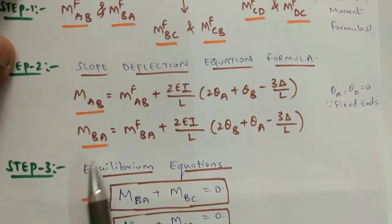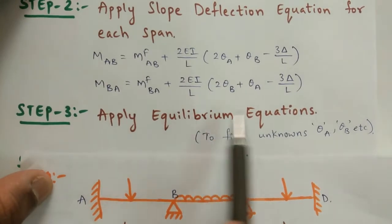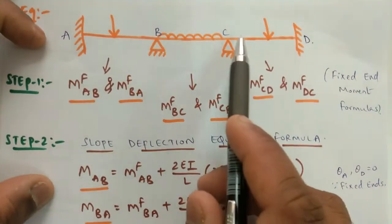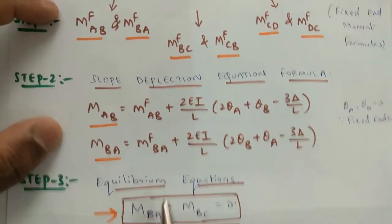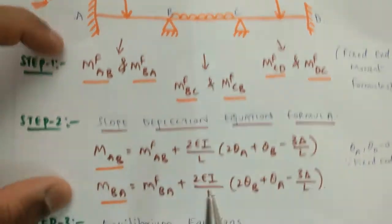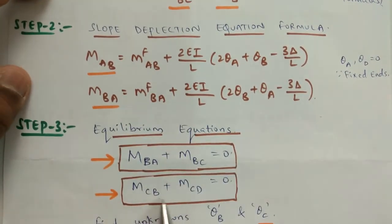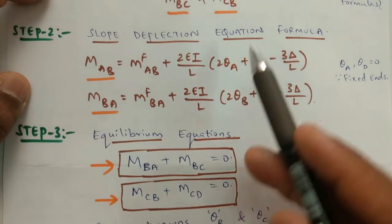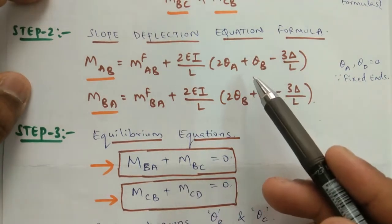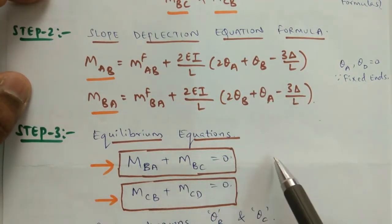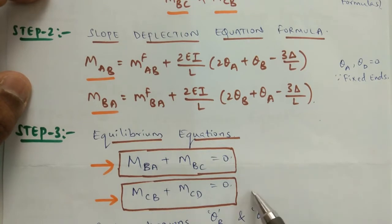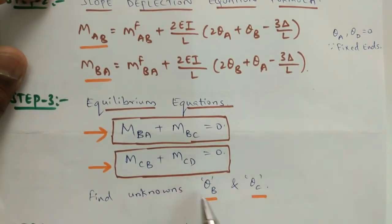Then in the third step, you have to apply the equilibrium equations to find the unknowns. Here, the unknowns are theta_B and theta_C. To find theta_B and theta_C, you apply the equilibrium equations: MBA plus MBC equals zero, and MCB plus MCD equals zero. From the six equations you will get another two equations — equation 7 and equation 8. After solving those two equations, you will find the unknowns theta_B and theta_C.